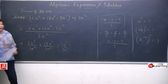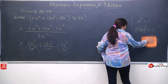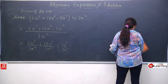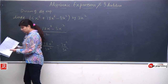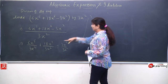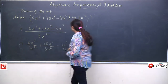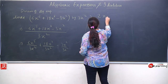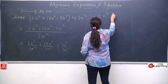Ab dekhiye divide karna kitna easy ho jayega. Ek property yaad rakhein: kabhi bhi kisi ki power 0 ho, to woh equivalent to 1 hota hai. Ab iske baad jo aapka step hoga: number se number divide ho jayega. 3 twos of 6, so you will get 2. Base same hai, to power subtract hogi. 5 minus 2 — pahla term clear ho gaya.